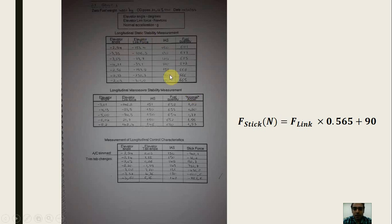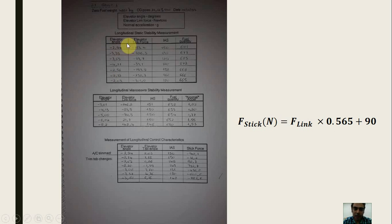So we have an airplane, flight test data, and a transfer function. Our goal is to create a plugin inside X-Plane that, in each flight loop, gets the indicated airspeed and elevator angle, uses these tables to calculate elevator link force, then calculates stick force and registers it in the data ref editor so the user can see and use it — for example in a force feedback system.